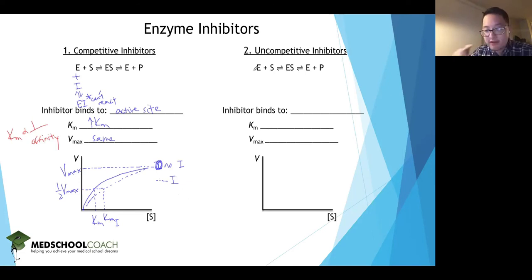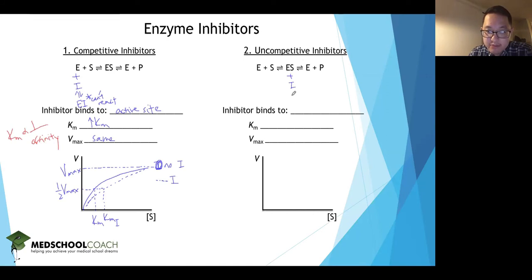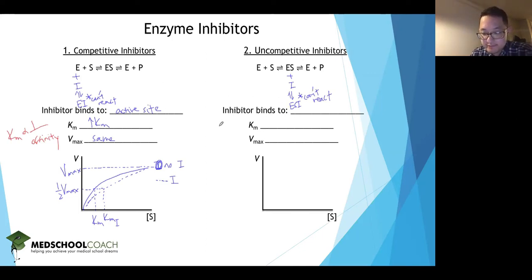Now let's look at the uncompetitive inhibitor. Unlike the competitive inhibitor, which competes directly with the substrate, the uncompetitive inhibitor has no competition. It doesn't even bind to the enzyme itself — it binds to the enzyme-substrate complex. This creates a similar issue: once you form this enzyme-substrate-inhibitor complex, it can't react. The inhibitor does not bind to the active site.